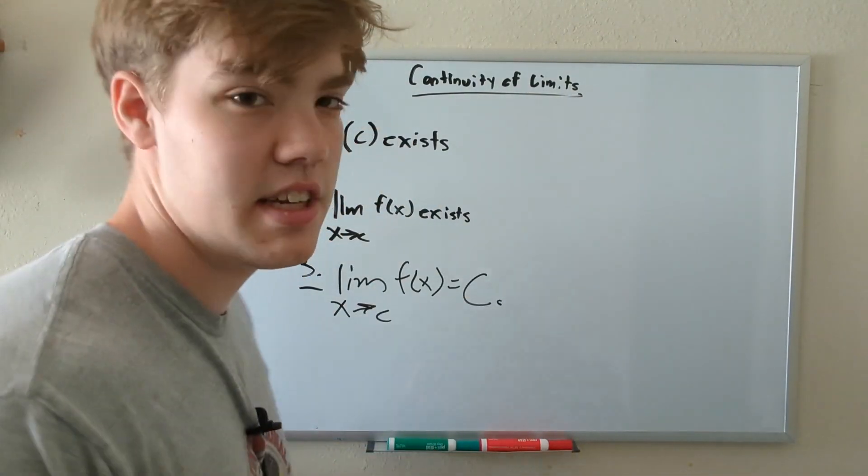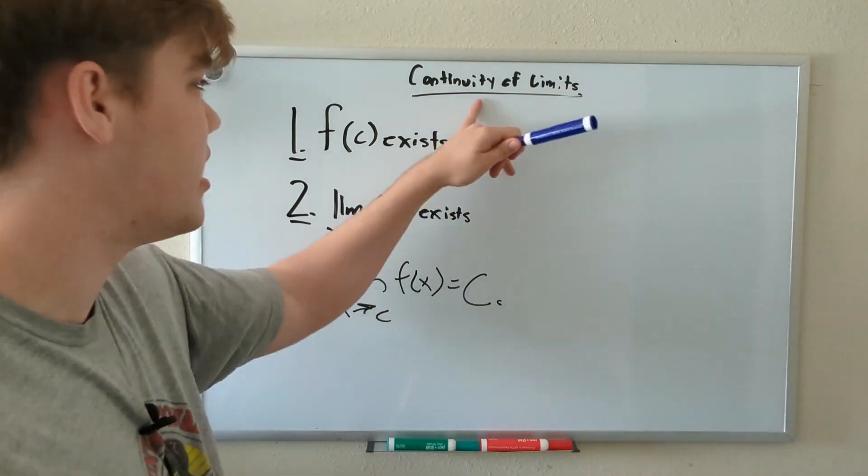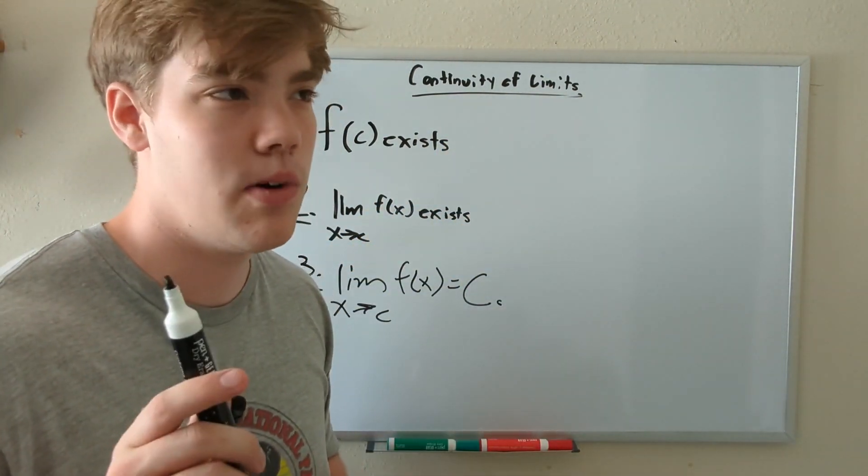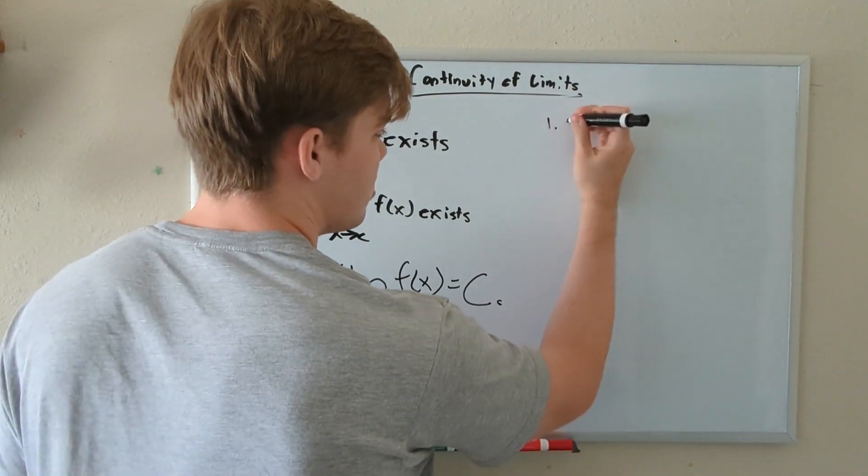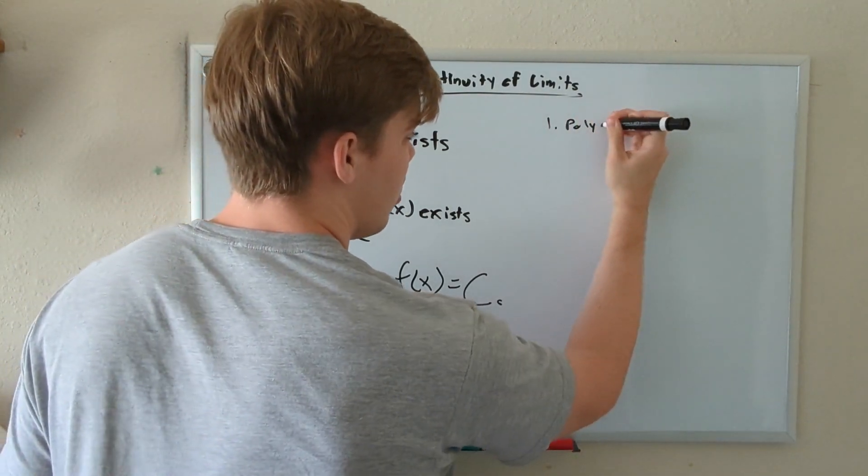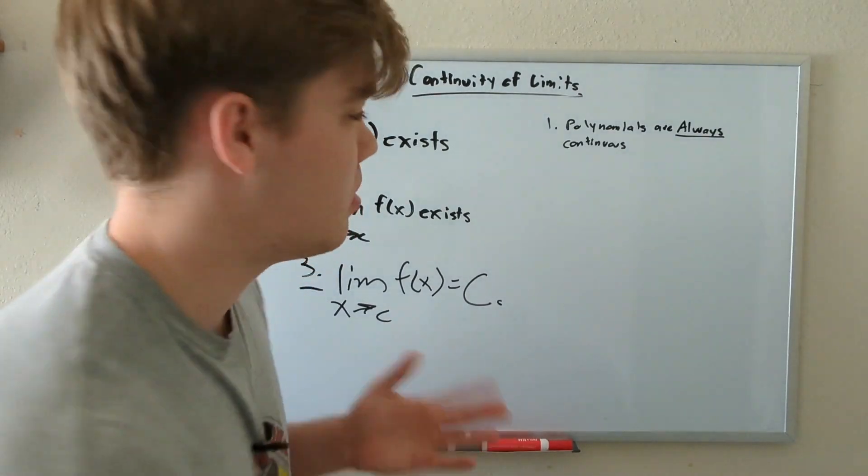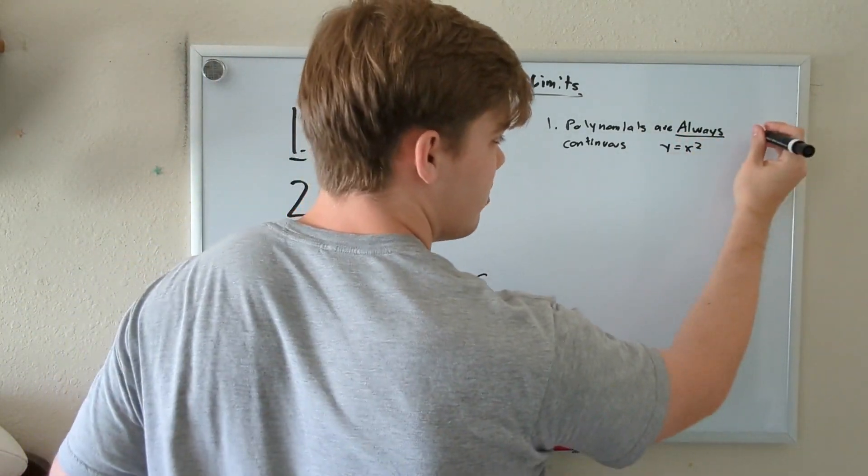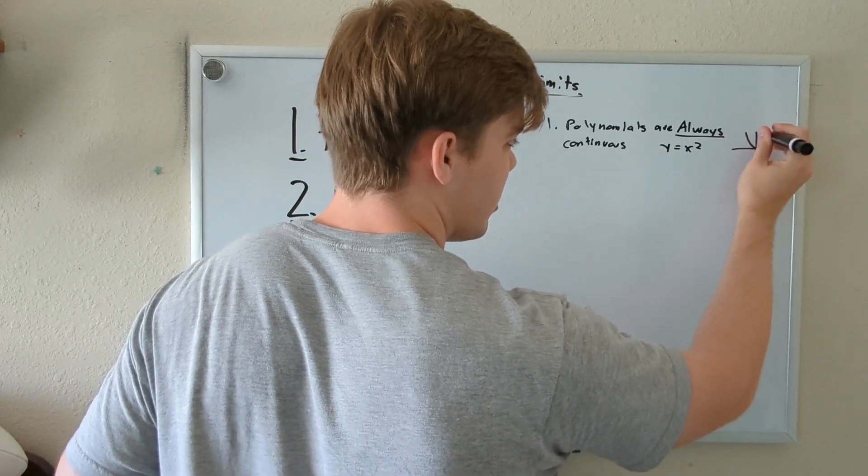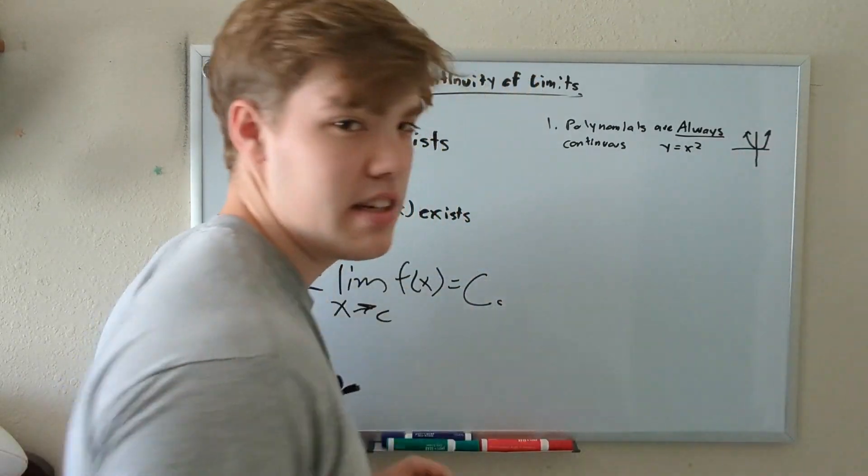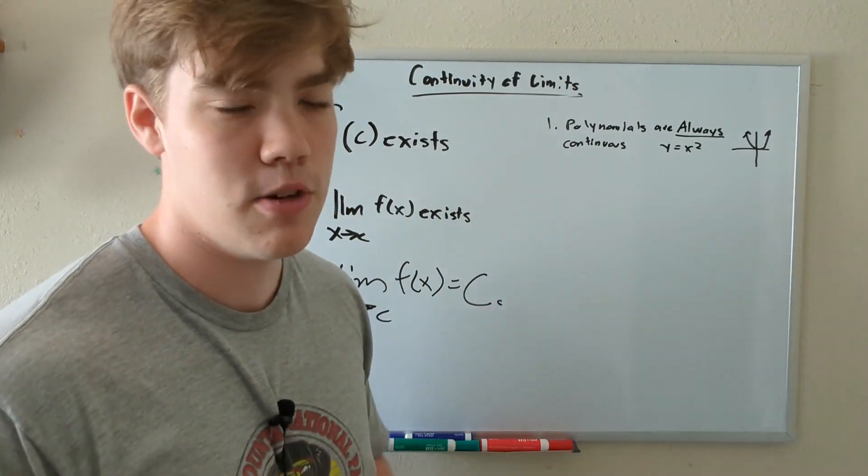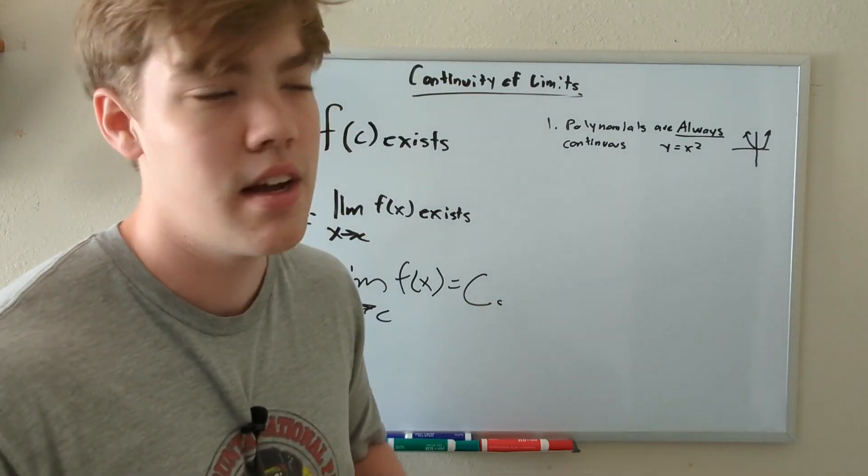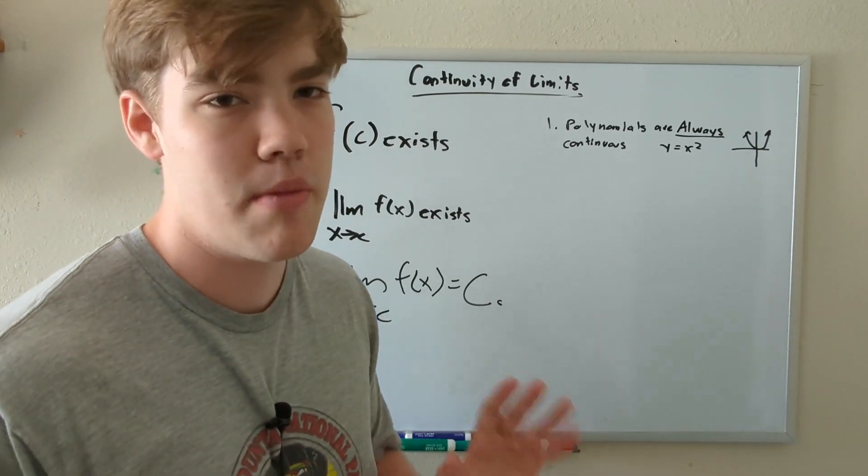And the last thing we're going to talk about for today's lesson is some tricks that can help us solve these kinds of continuity of limits problems just a little bit faster. Because there's some things that will always be continuous. Number one, polynomials. Polynomials are always continuous. So as an example, let's just say we had the polynomial Y equals X squared. The graph looks something like this, the classic parabola. This function is continuous everywhere and will be true for any polynomial, whether that's X cubed, X to the fourth, X squared plus seven X minus seven.